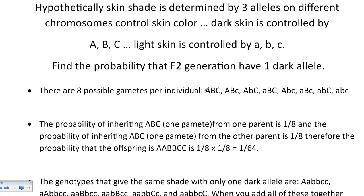The easiest way to list gametes is to start with ABC all capitals. Moving from right to left, make one allele lowercase while the rest stay capital — so first C is lowercase, then B, then A. Once you reach all lowercase, reverse direction going right for dominant alleles. Following that back-and-forth pattern ensures you list all gametes. After listing, you'll find there are eight possible gametes for the F1 generation that will combine to make the F2.